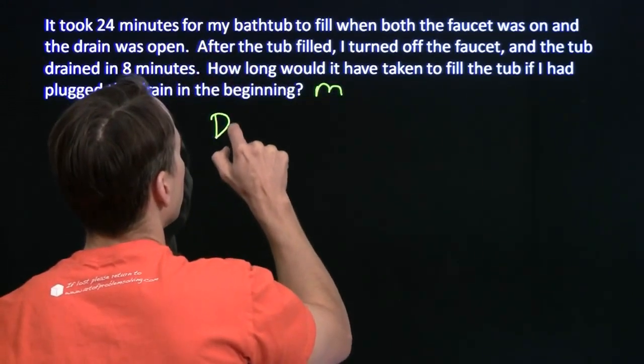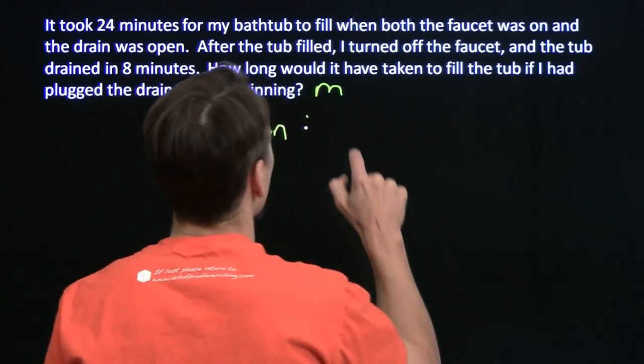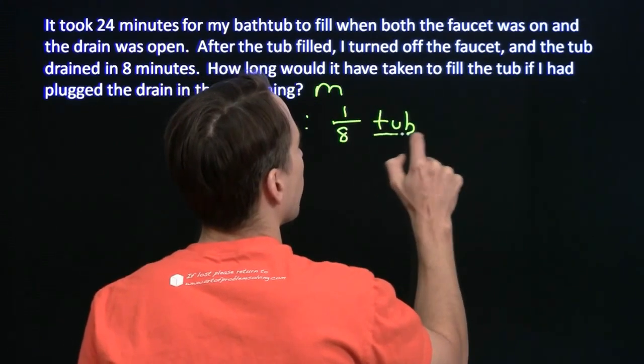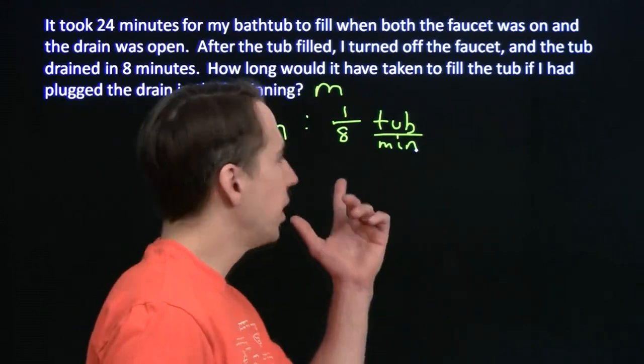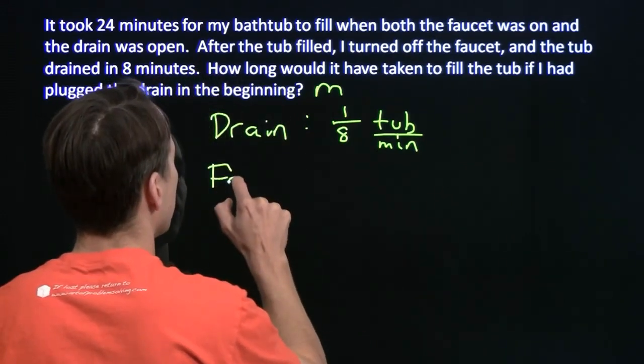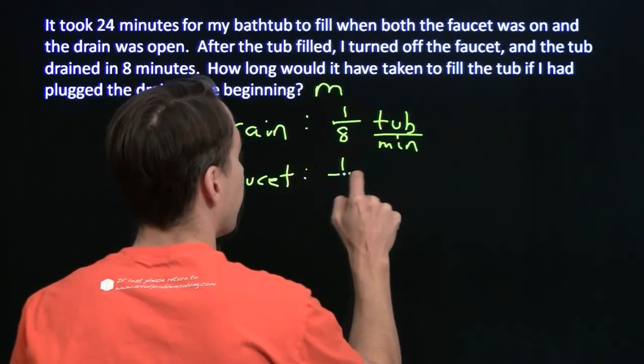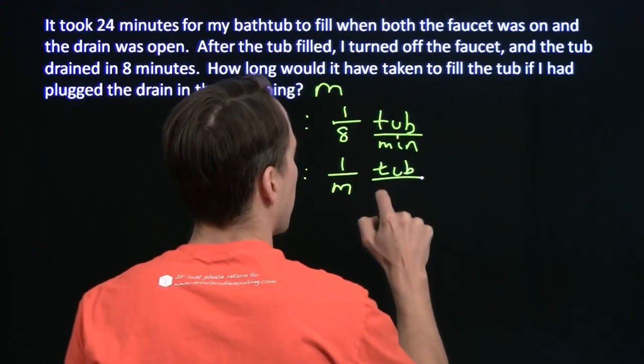So the drain's rate, the drain is one-eighth tub per minute. It's going to empty it out, one-eighth tub per minute. And the faucet, its rate, it's going to fill at one over m tub per minute.